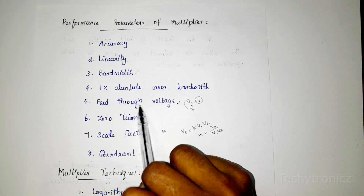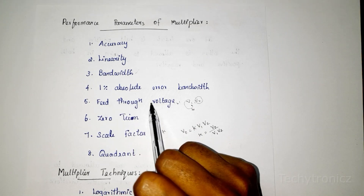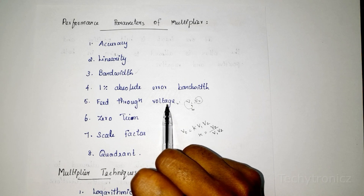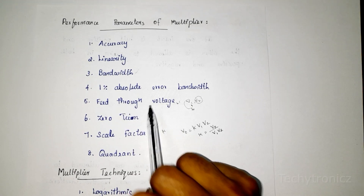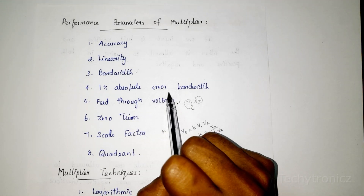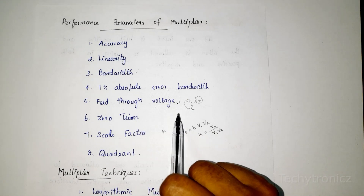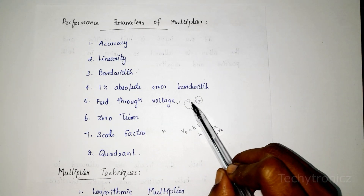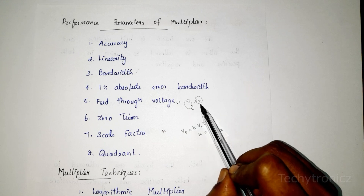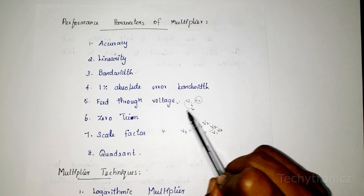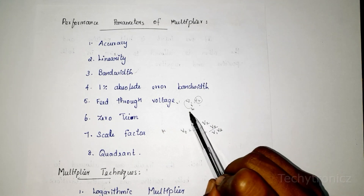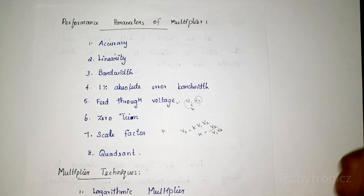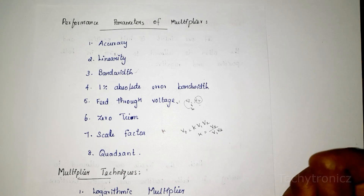Feed through voltage is the peak-to-peak output voltage when one of the input voltages, either V1 or V2, is grounded. That peak-to-peak output voltage is called the feed through voltage.